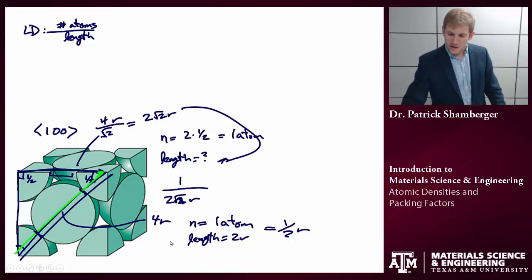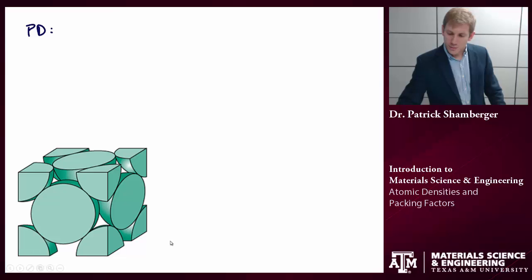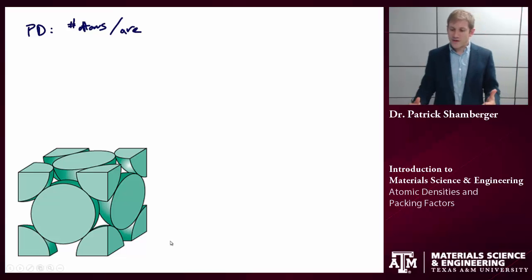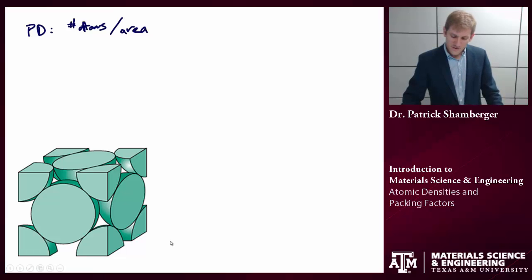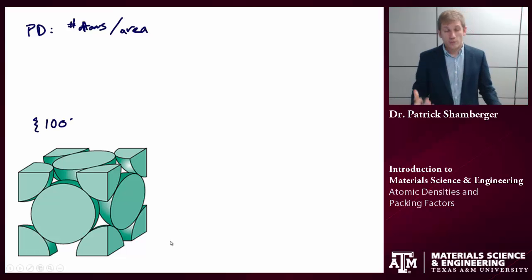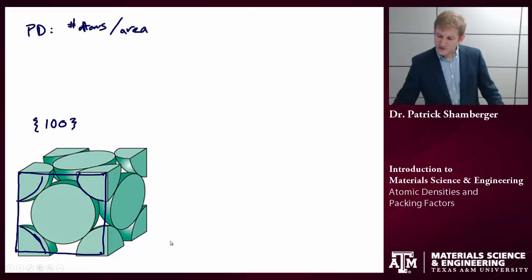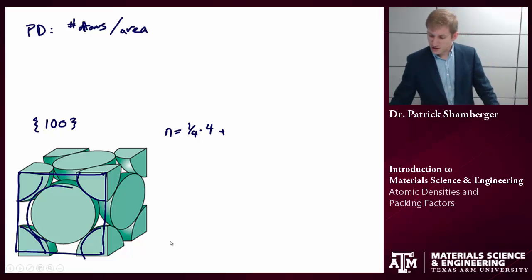Let's talk about planar densities — the number of atoms per unit area. So now I'm talking about a plane, and I care about the number of atoms per area that I've drawn. Let's look at the [1,0,0] family of planes. One example would be this front face of the cube. Number of atoms: I see 4 atoms on the corners, but really only a quarter of those atoms are within this area. Plus there is 1 atom sitting right in the middle, and all of that atom is in the plane in question. So n equals one-quarter times 4 plus 1, which is 2 atoms.